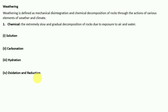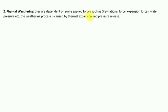In reduction, oxidized minerals are placed in an environment where oxygen is totally absent. For example, the red color of iron upon reduction turns greenish or bluish-gray. These are all the forms of chemical weathering.